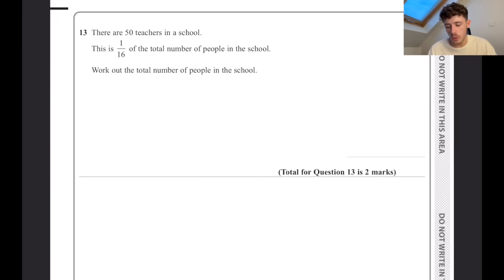There are 50 teachers in a school. This is 1/16th of the total number of people in the school. So 1/16th equals 50. Probably the easiest way to do this, the total number of people in the school is going to be 16 out of 16. So we can do 50 times by 16, and that's going to be 800.